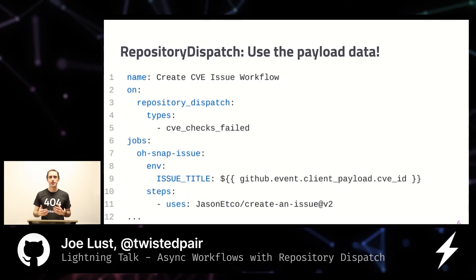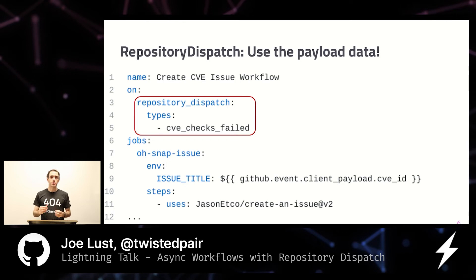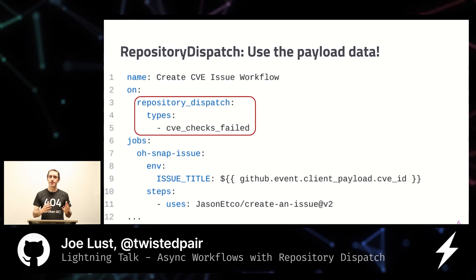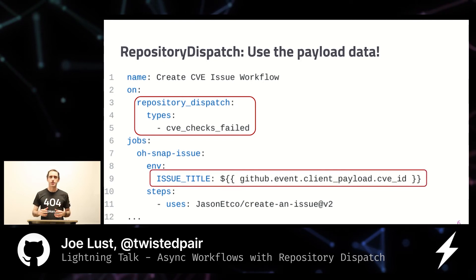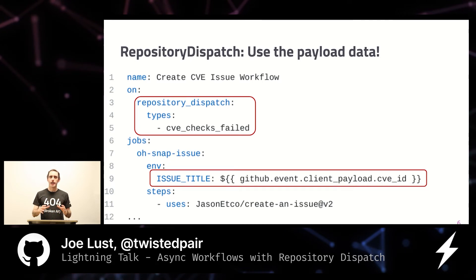Using that data, we can do all sorts of useful things, such as the second example, where not everything went well during our CVE scan, so a different event was fired through Repository Dispatch — the CVE checks failed event. And now we're using a third-party action, for example Jason Etko's create issue action, to make an issue against that repository, and note what the CVE was by changing the title to the actual payload that came out of that event.